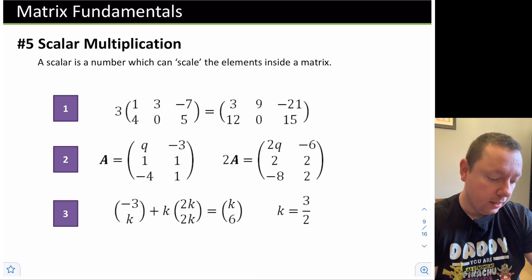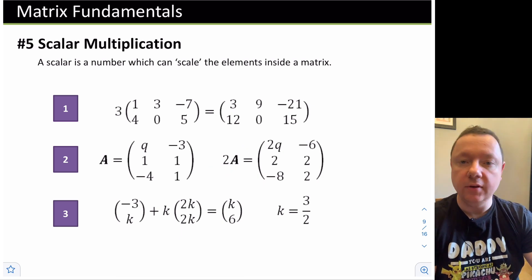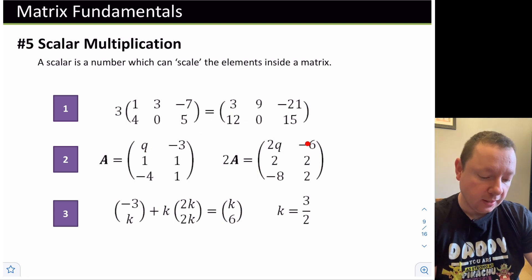Similar way of looking at example 2. We've got a equals q, -3, 1, 1, -4, and 1. So if we wanted to do 2a, we just times each individual element by 2. So 2q becomes 2q, -3 becomes -6, 1 becomes 2, 1 becomes 2, -4 becomes -8, and 1 becomes 2.